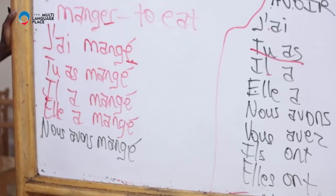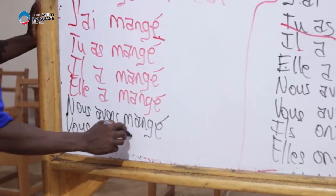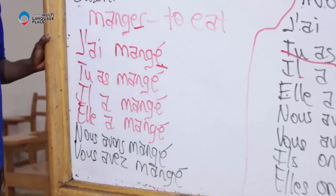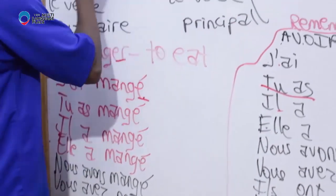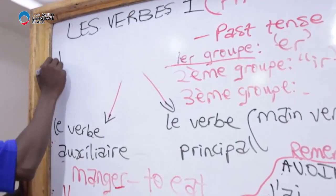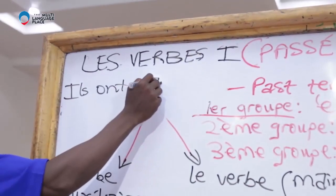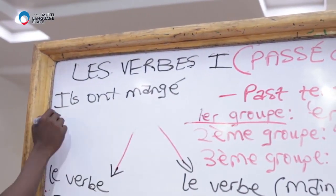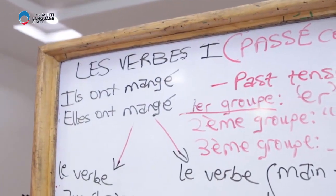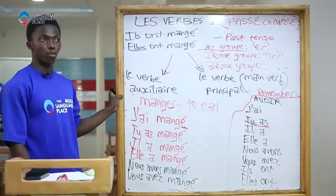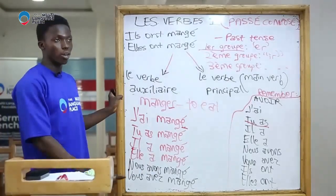You see why first group verbs are regular? They follow a regular pattern. Nous avons mangé. For vous, vous avez mangé. For ils ou elles, ils ont mangé et elles ont mangé. This is the format for first group verbs — verbs that end with -er and follow a regular pattern of conjugation.